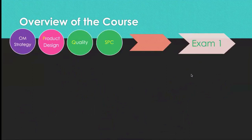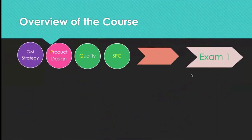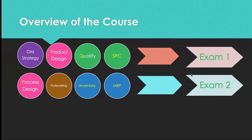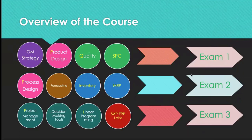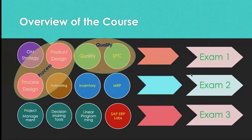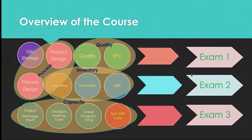This course is organized around QPIC. Operations management, product design, quality, and statistical process control charts will be covered first, followed by Exam 1. Then process design, forecasting, inventory management, and material requirements planning lead to Exam 2. Finally, project management, decision-making tools, linear programming, and SAP ERP labs conclude with Exam 3. The chapters are not followed sequentially from the book — quality, process, inventory, and capacity decisions are embedded across chapters.